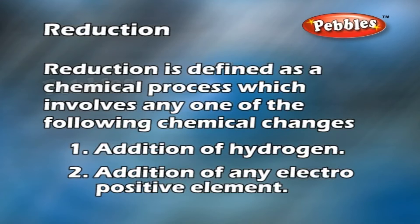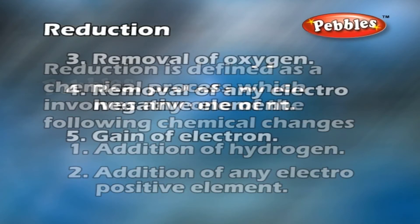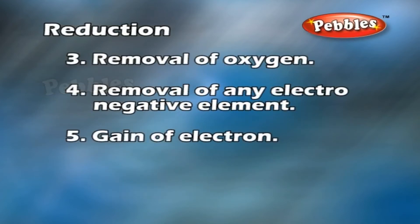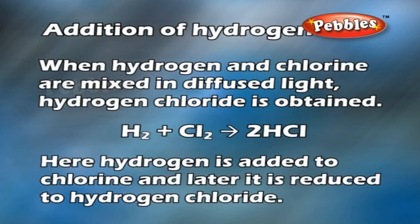The chemical changes in reduction include: addition of hydrogen, addition of any electropositive element, removal of oxygen, removal of any electronegative element, and gain of electron. Addition of hydrogen: when hydrogen and chlorine are mixed in diffused light, hydrogen chloride is obtained.